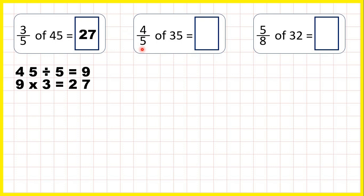Now find 4 fifths of 35. We start by dividing by the denominator, and 35 divided by 5 is 7. Then we take that 7 and times top, and 7 times 4 is 28. So that's our answer.